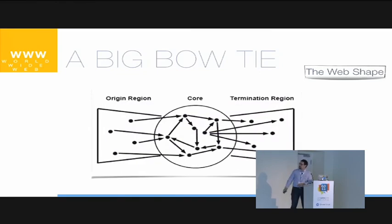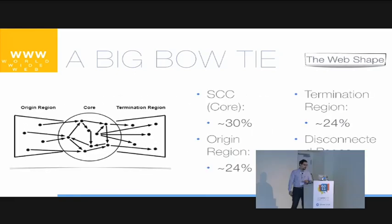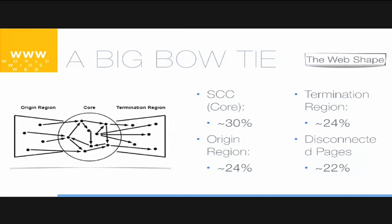The web graph is composed by a core, which is the main part, also known as the strongly connected component. That's the core of the web, where all the pages link to each other. On the left, there are origin regions containing pages and resources that link to the core, and the termination region contains pages linked to by the pages in the core. The core contains almost 30% of the web, the outer regions contain almost 25%, and there is a 22% of disconnected pages. This is, of course, an estimation.